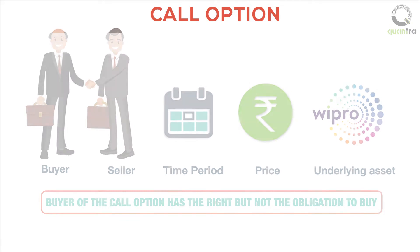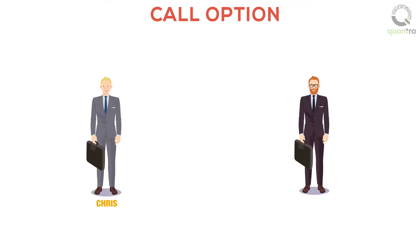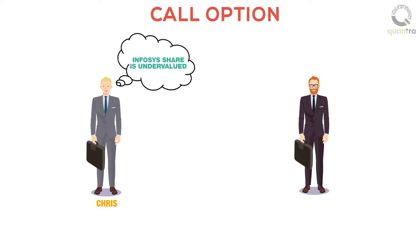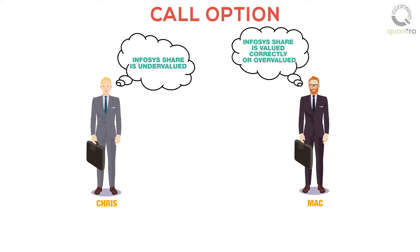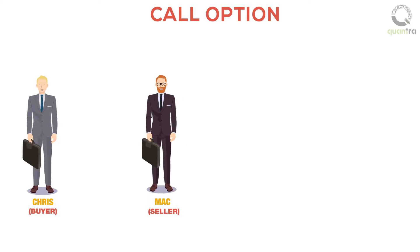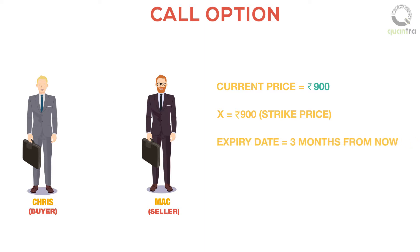How does a call option work? Chris is of the opinion that the current share price of Infosys, which is trading at Rs.900, is undervalued, and expects the price to increase in the future. However, Mac is of the opinion that the Infosys share price is valued correctly or that it is overvalued. So Chris becomes the buyer of the call option, and Mac decides to sell a call option. Chris pays a premium of Rs.10 to Mac. Let the strike price X of the contract be Rs.900, and the time to expiry or exercise date be 3 months from now.